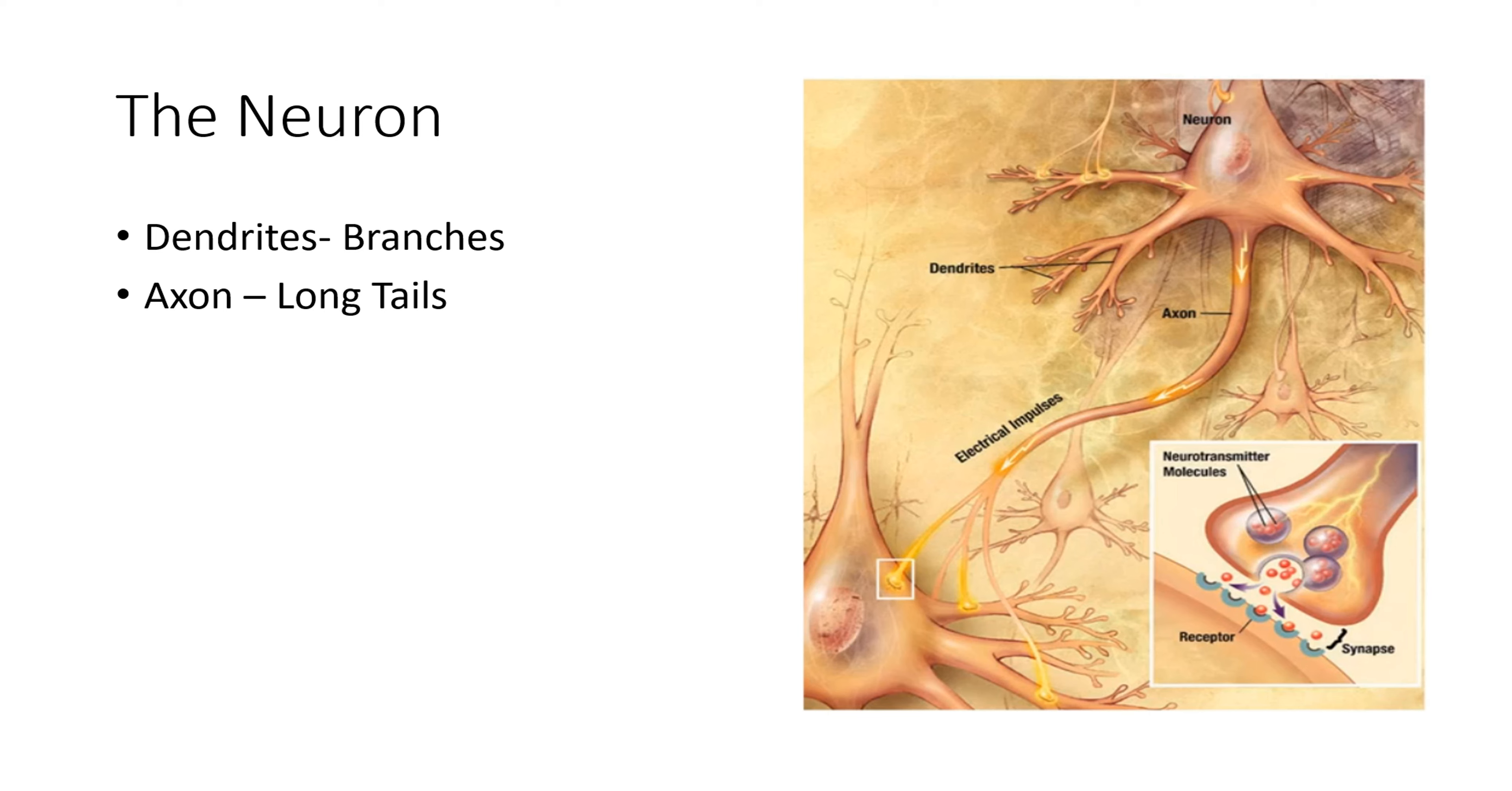If we see it from a more biological perspective, we'll come to this picture. This is an actual picture of how neurons are constructed. Here we can see there are dendrites, these long branches, and axons are long tails which carry the electrical impulses.